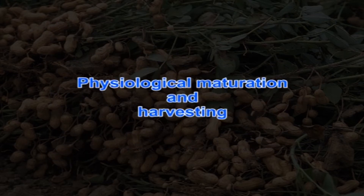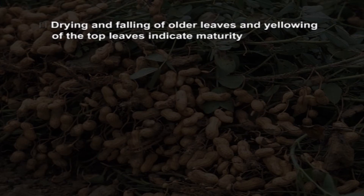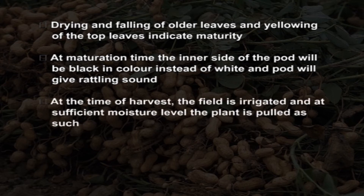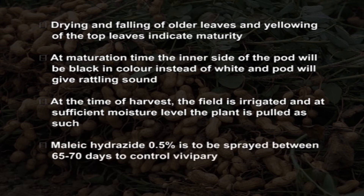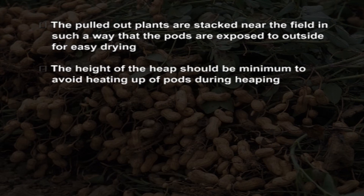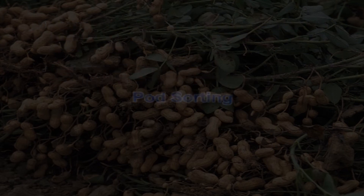For physiological maturation and harvesting, drying and falling of older leaves and yellowing of the top leaves indicate maturity. At maturation time, the inner side of the pod will be black in color instead of white, and the pod will give a rattling sound. At the time of harvest, the field is irrigated and at sufficient moisture level the plant is pulled. Maleic hydrazide at 0.5 percent is to be sprayed between 65 to 70 days to control vivipary germination. The pulled-out plants are staked near the field so that the pods are exposed to outside for easy drying. The height of the heap should be minimum to avoid heating up of pods during heaping.